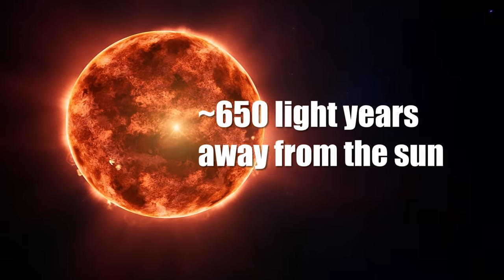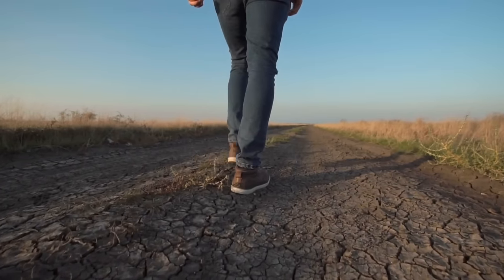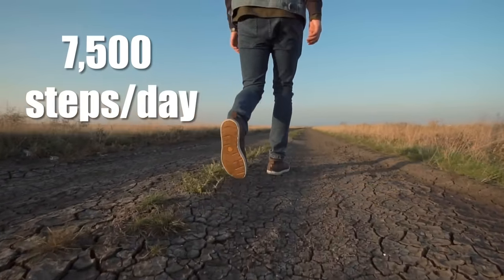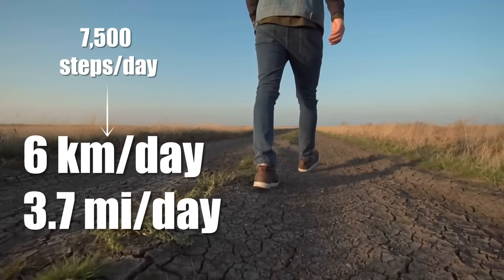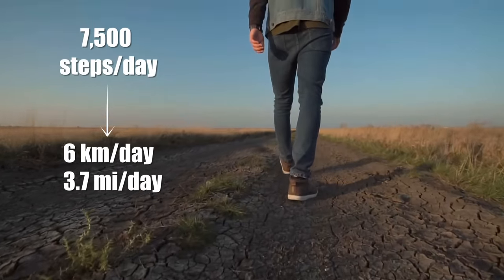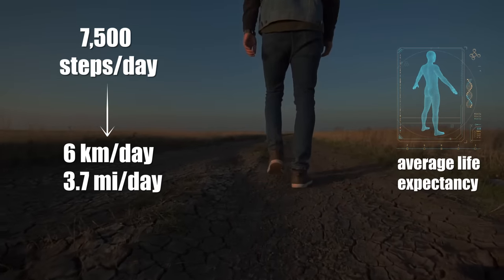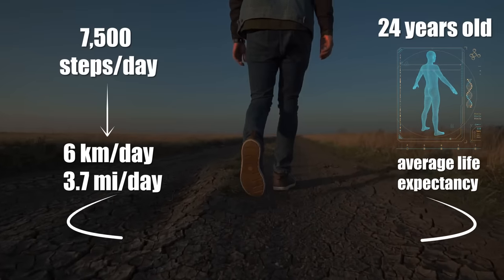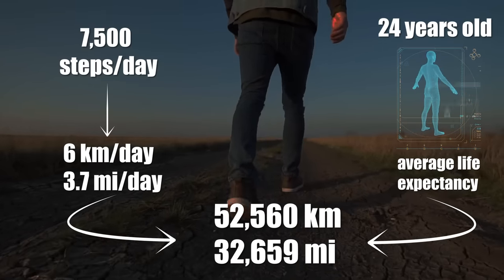To put this colossal distance into perspective, consider the daily routine of an average, moderately active person, who takes around 7,500 steps a day, equating to roughly 6 kilometres of walking every day. For most of the world, throughout most of human history, the average life expectancy from birth was around 24. This translates to a lifetime walking distance of approximately 50,000 kilometres for the average human.